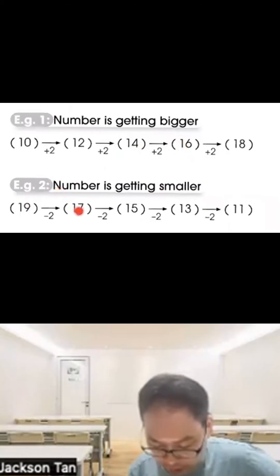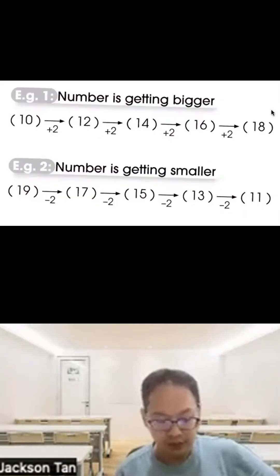When numbers get smaller, like from 19 to 17, use minus. Minus 2 gives 17, to 15 is minus 2, to 13 is minus 2, to 11 is minus 2. Note whether the pattern is getting bigger (plus) or smaller (minus).